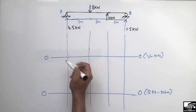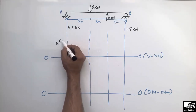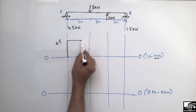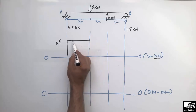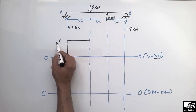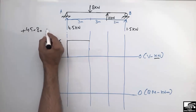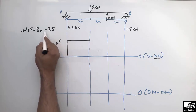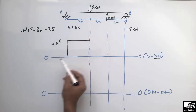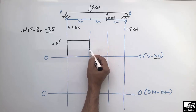Starting from the left side at support A, 4.5 kN is acting upward, so we draw the line up to the 4.5 scale. There is no load on the beam between A and the first load, so it is a straight horizontal line. Then 8 kN is acting downward, so 4.5 minus 8 gives minus 3.5 kN. This is below the zero-zero reference line, so the shear force drops to minus 3.5 here.